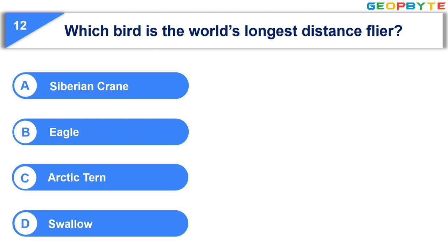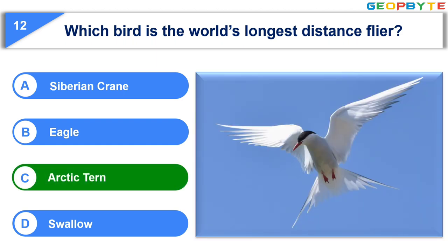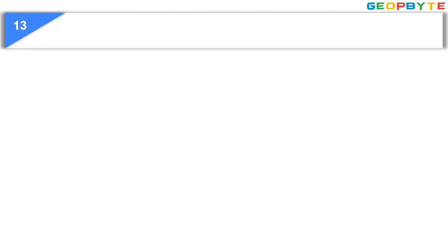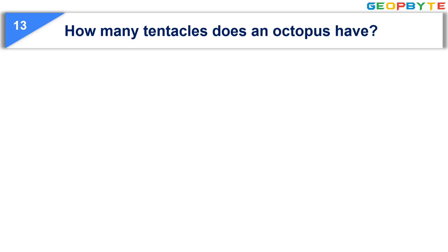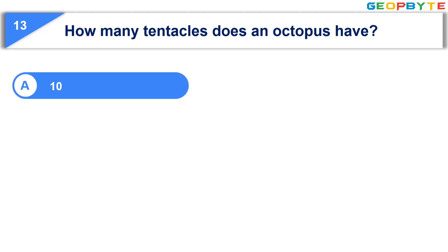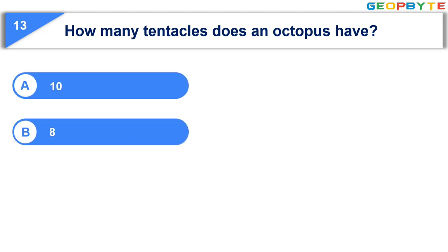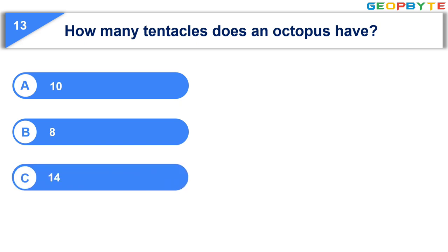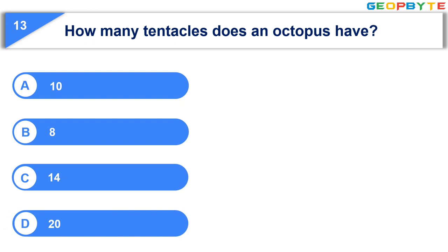The correct answer is Option C: Arctic tern. Moving to the thirteenth question: How many tentacles does an octopus have? Option A: 10. Option B: 8. Option C: 14. Option D: 20. Your time starts now.